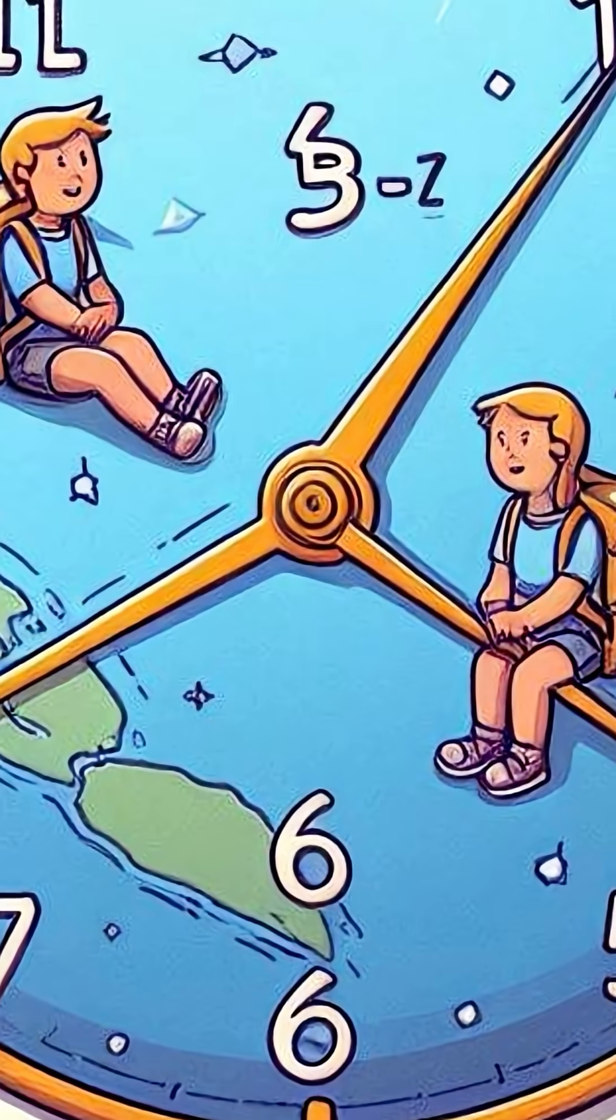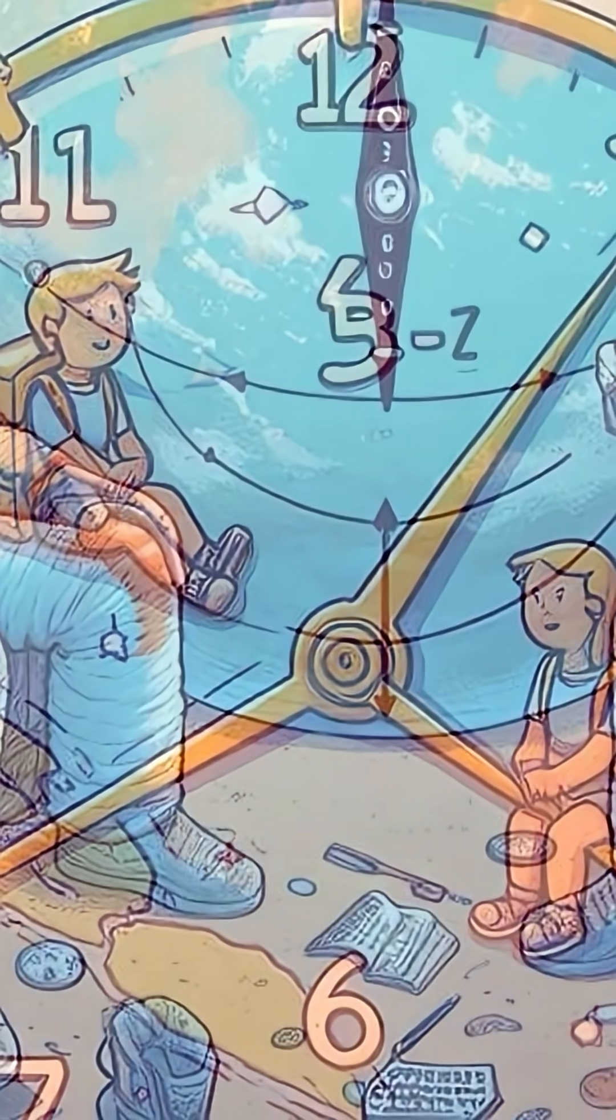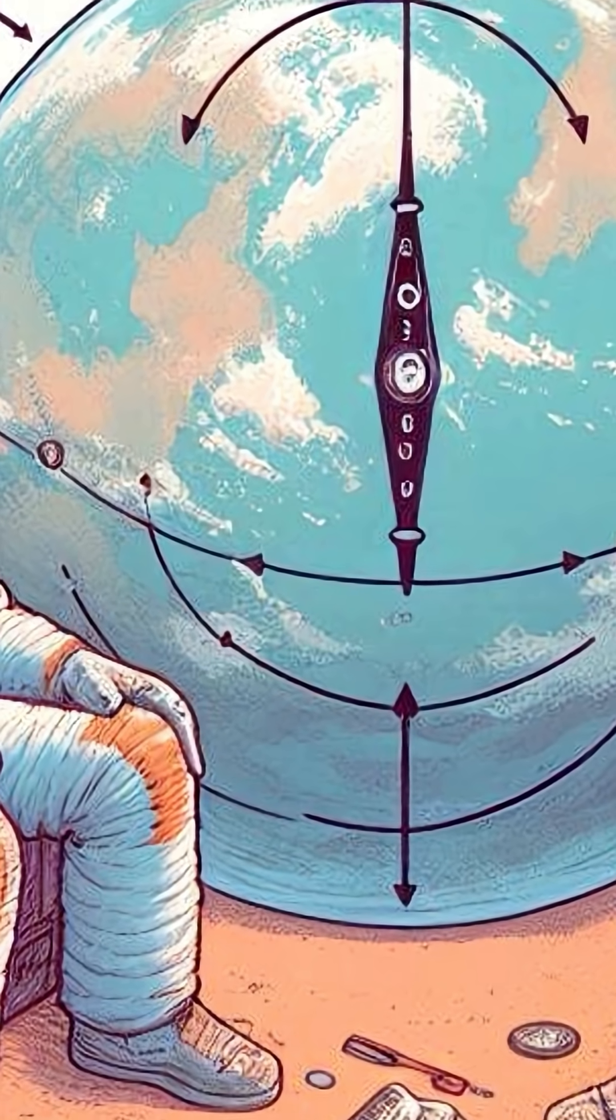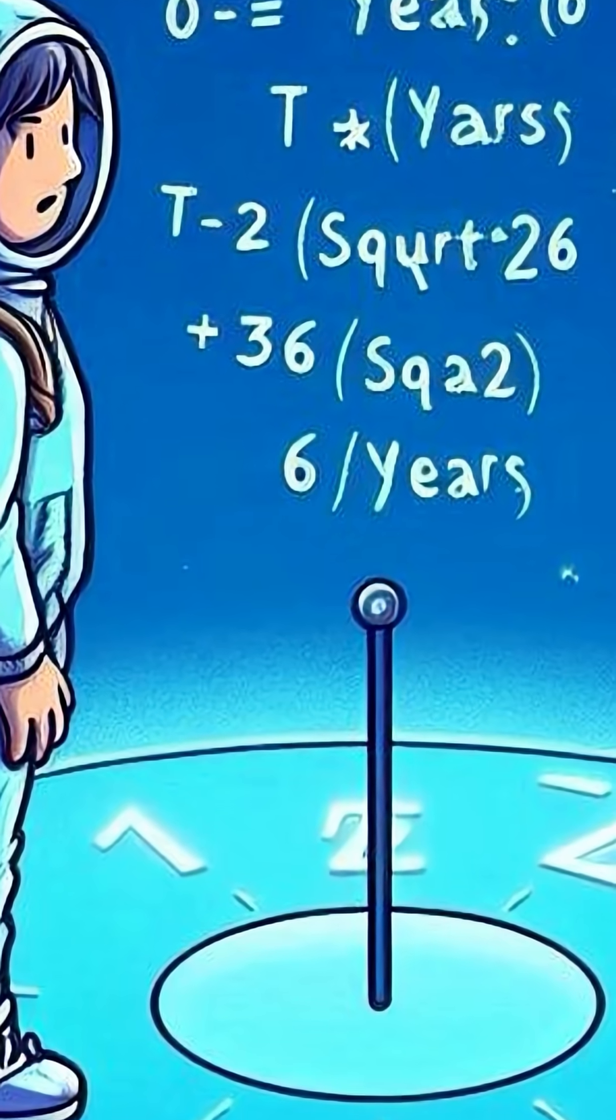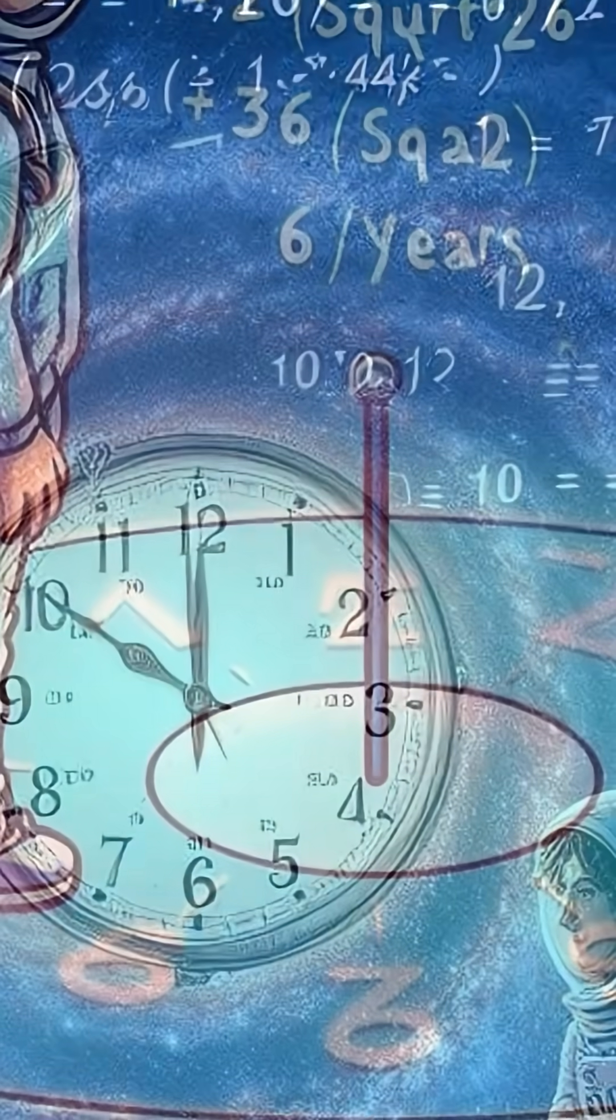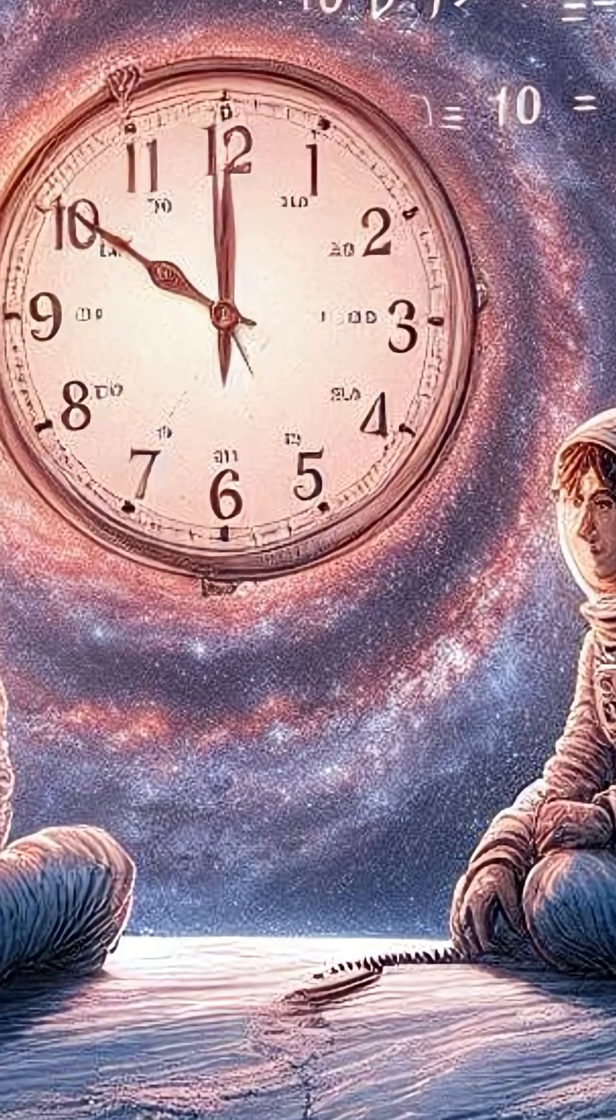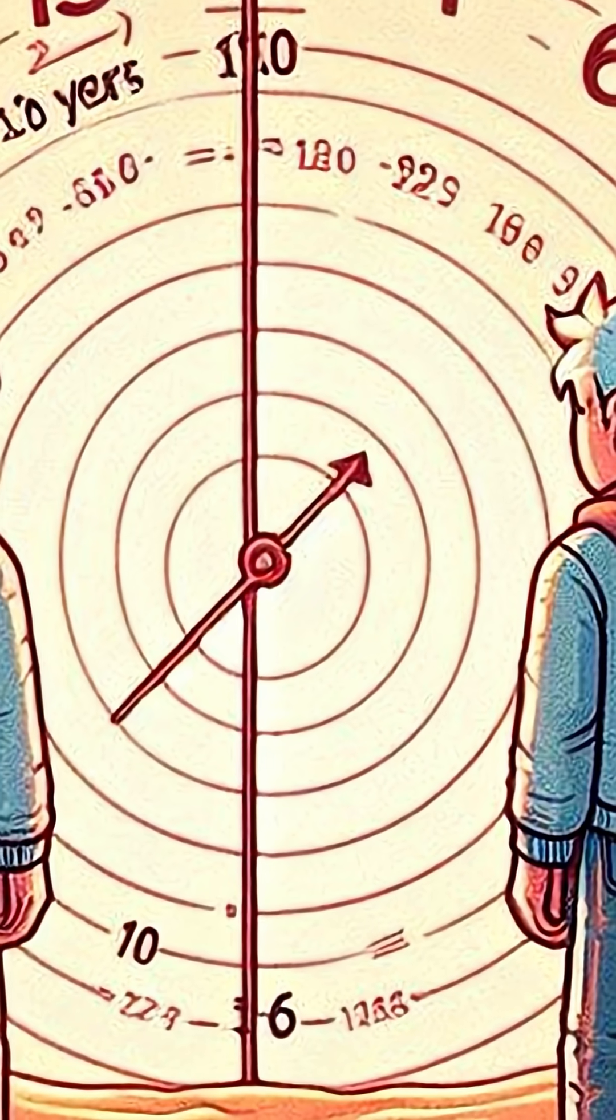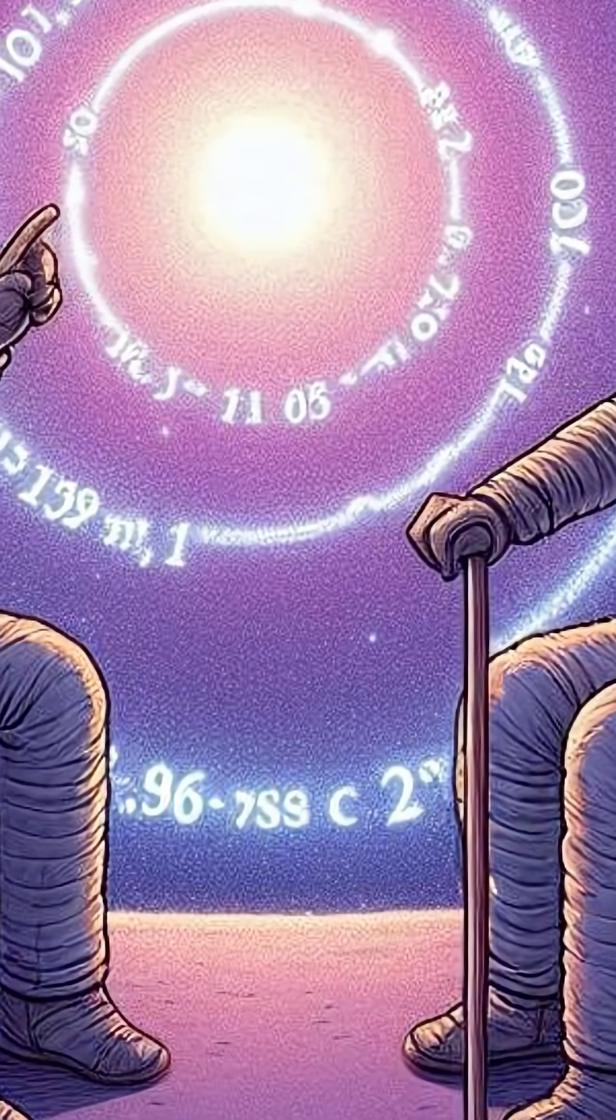We can calculate the time they experience using the formula: t_t equals 10 years times square root of 1 minus (0.8c)² divided by c². t_t equals 10 years times square root of 1 minus 0.64. t_t equals 10 years times square root of 0.36. t_t equals 10 years times 0.6 equals 6 years.